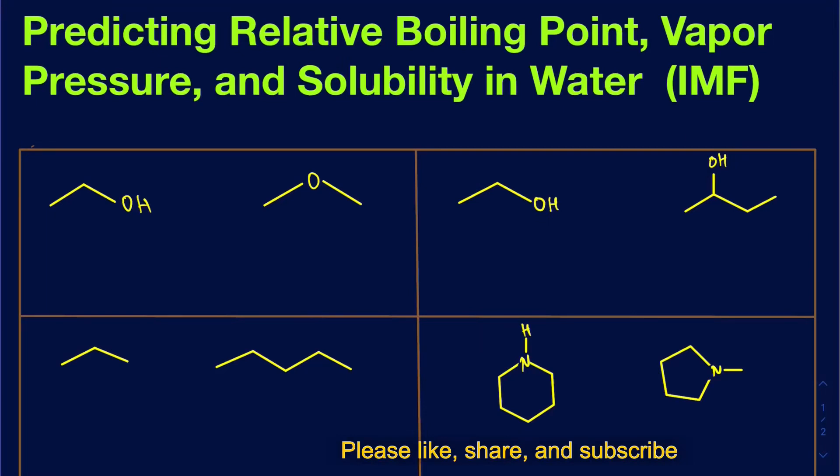Hello, everyone. In this video, I'm going to be predicting the relative boiling points, the vapor pressure, and the solubility in water between two compounds that are going to be given as structures — organic compounds for the most part — based on their IMF, which means intermolecular forces. The three main types of intermolecular forces we focus on are dispersion, dipole-dipole, and the hydrogen bond.